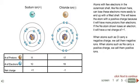When atoms such as chlorine carry a negative charge, we call them negative ions. When atoms such as sodium carry a positive charge, we call them positive ions.